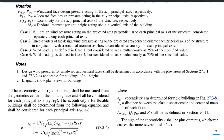Case 1 is the full design wind pressure acting on the projected area perpendicular to each principal axis of the structure, considered separately along each principal axis — X separate, Y separate. Case 2 is three-quarters (75%) of the design wind pressure acting on each principal axis in conjunction with a torsional moment. Case 3 is the same as Case 1 but both X and Y forces act simultaneously at 75% of the specified value. Case 4 is the same as Case 2 but applied in both directions simultaneously at 75% of the forces.